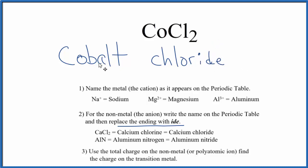So the name we have now is cobalt chloride. But since cobalt is a transition metal, we need to write the charge in the name because transition metals can have different charges depending on what they're bonded to.